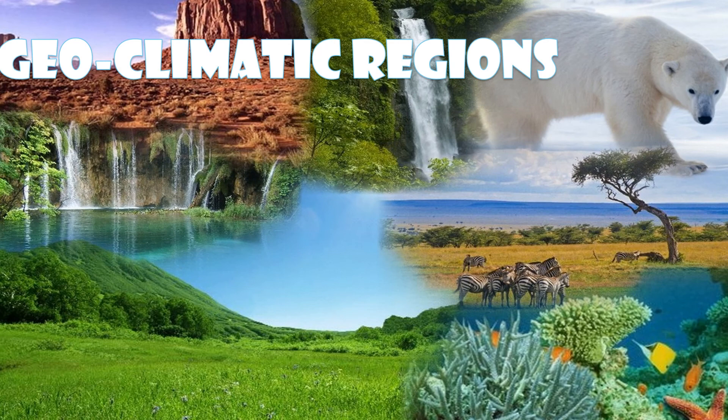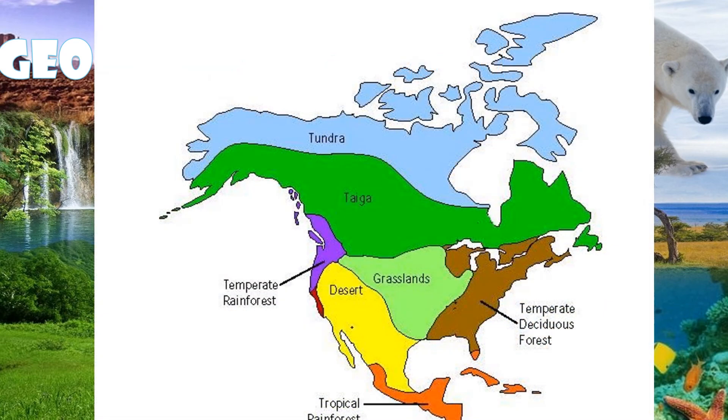Plant life and wildlife are a greater indication of the climatic regions, geography, and geology. In North America, you can find every single one of Earth's major biomes. These include tundra, four different kinds of forests, grasslands, and deserts.